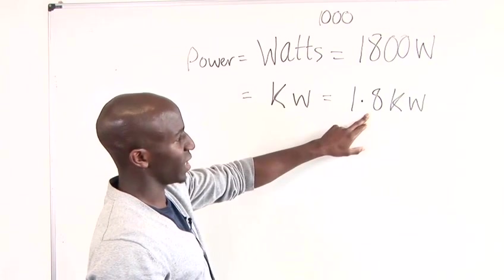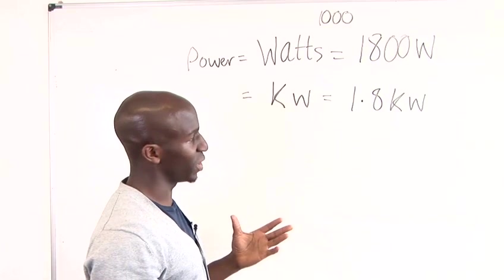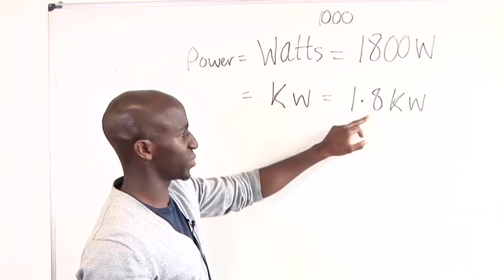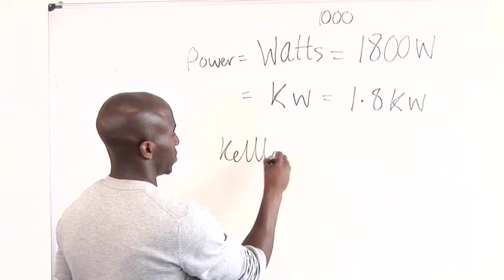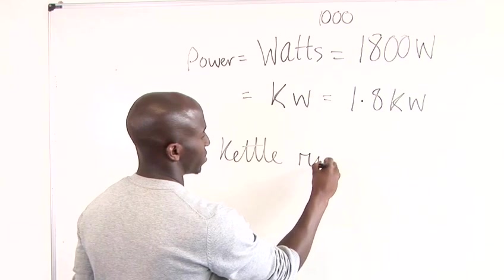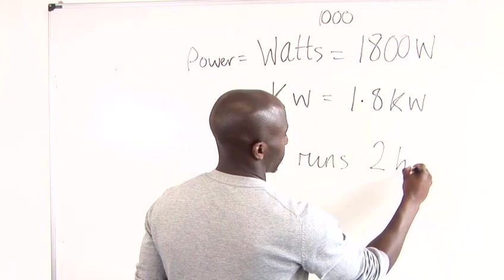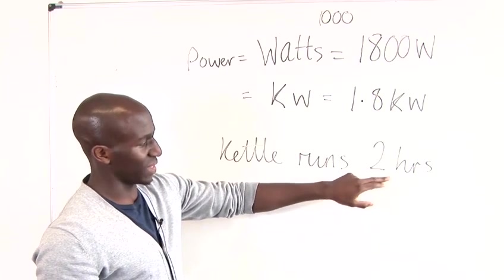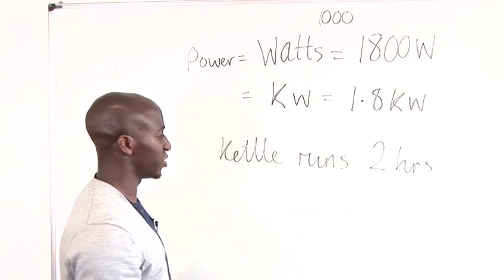Now, the next thing you would want to do is look at how much usage in terms of hours you have for your kettle. If the kettle runs two hours, all you'll need to do is multiply this time reading by your power reading to give you energy.